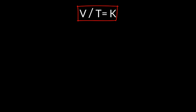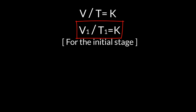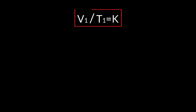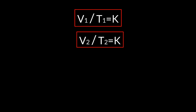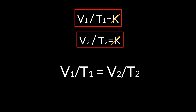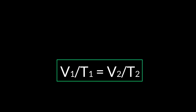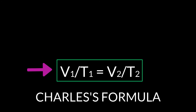The formula of Charles's law. From the Charles's tutorial, we got V over T equals K. For the initial stage, we can write V1 over T1 equals K. And for the changed stage, we can write V2 over T2 equals K. As V1 over T1 equals K and also V2 over T2 equals K, therefore we can write V1 over T1 equals V2 over T2. And this is the formula for Charles's law.